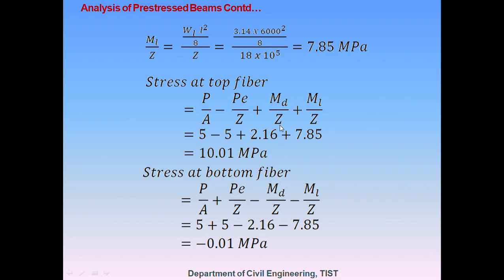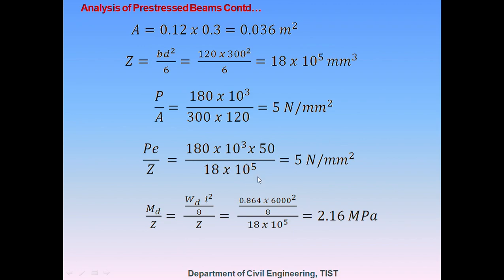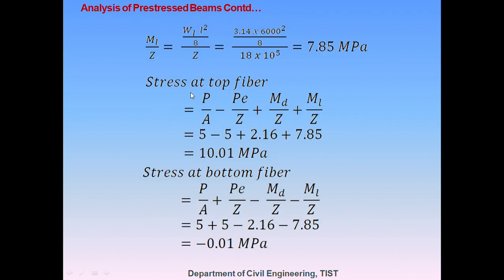The third term is MD/Z. For a simply supported beam under UDL, the maximum moment is WL²/8. The dead load WD is 0.864 kN/m, giving MD/Z = 2.16 N per mm square. Similarly, ML/Z is calculated using ML = WL × L²/8, where WL = 3.14 kN/m, giving ML/Z = 7.85 MPa.